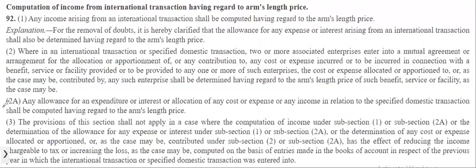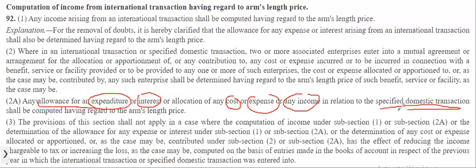Subsection 2A of Section 92 states that allocation for expenditure or interest or any cost, expense, or any income in relation to a specified domestic transaction shall be computed having regard to the arm's length price. So in the case of specified domestic transactions also, the same principles are followed.